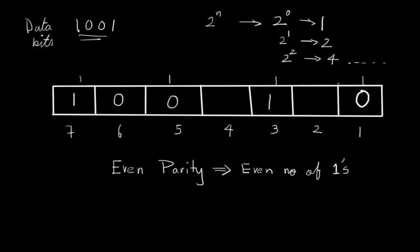So now check that 1, 3, 5, and 7, this block made by the bits of 1, 3, 5, and 7 have even number of ones. If it has, then you're right. So at third position is 1, and 7th position is 1.